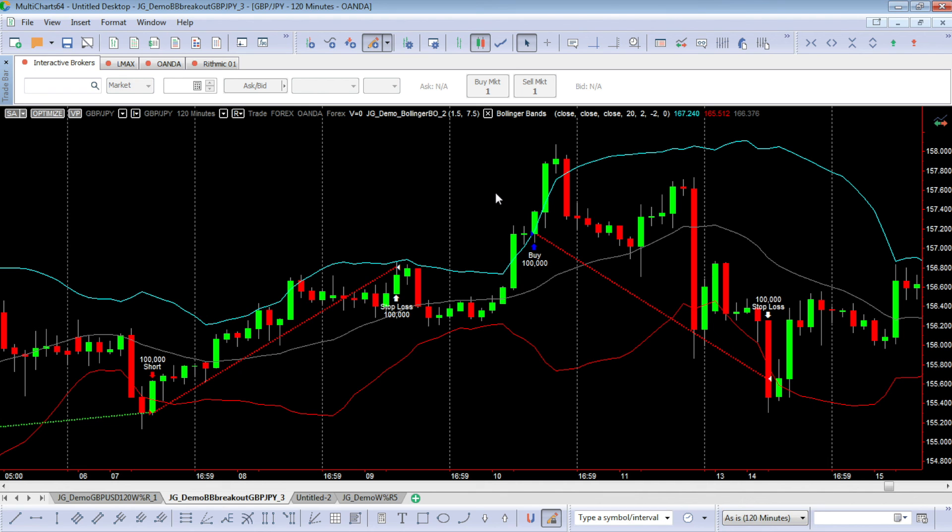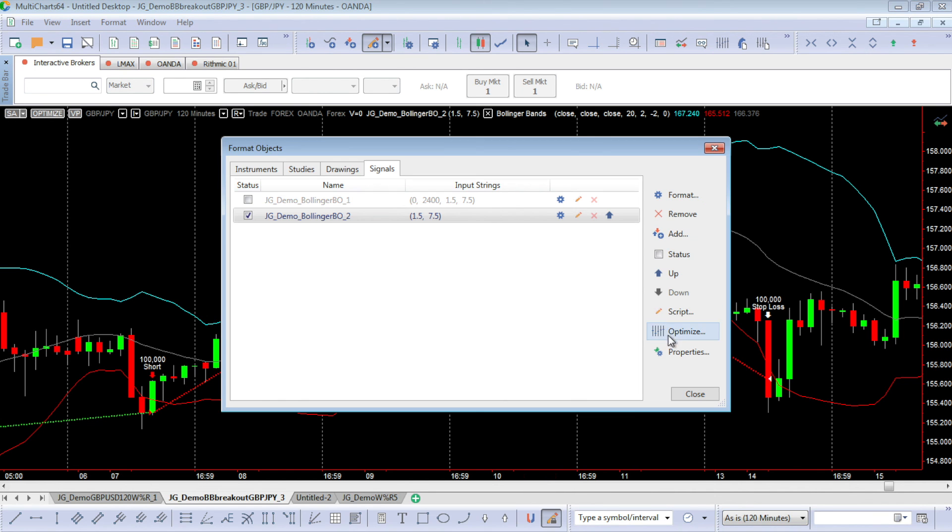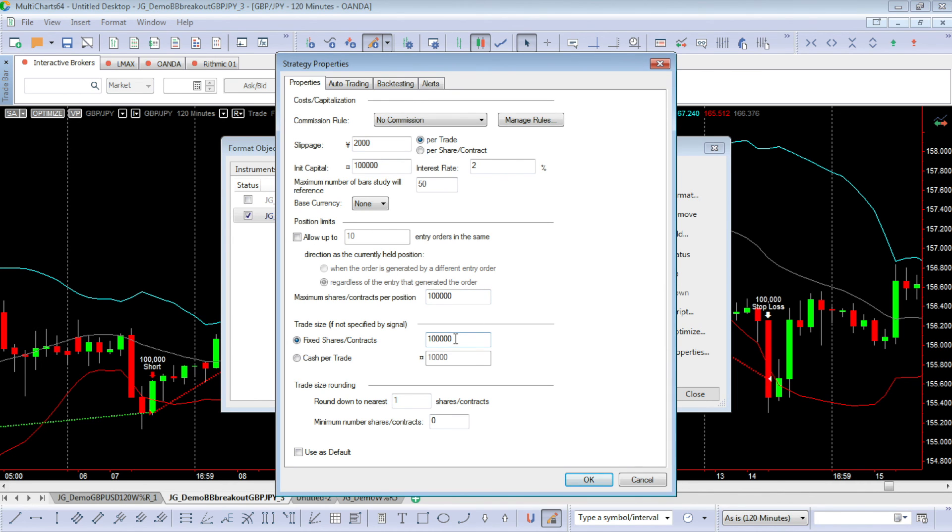If and when we're happy with the backtest and we want to actually trade this strategy live, it's quite simple. We just hit this button up here and that will actually turn on live trading. There's a few other bits we have to make sure: that the broker's connected correctly and our trade position size. We can write the position size within the code itself or we can just do it from the properties. At the moment I've got this backtest set at 100,000 units or one whole lot, and that's where we can adjust our trade size when we're live trading.